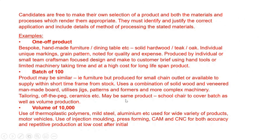Example answers: for one-off bespoke furniture — a dining table — you'd reference hardwoods like teak or oak, noting their individual grain and high quality, with limited machinery and handcrafted methods at high cost. For batch production, you might choose office furniture for small chain outlets. For mass production at 100,000 units, you could reference anything done by CAM or CNC, injection moulded or blow moulded products. The key in both questions is picking the correct product and demonstrating you understand the process.